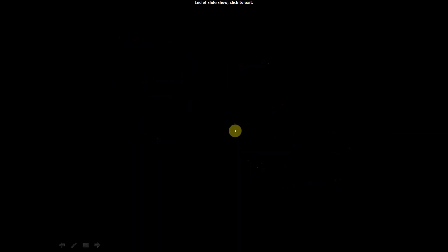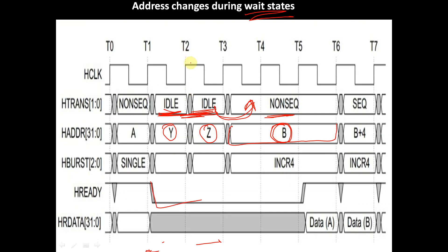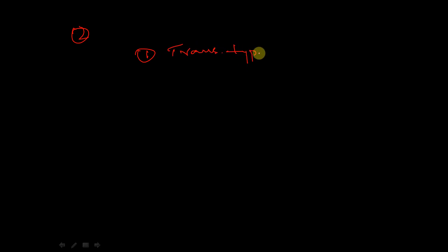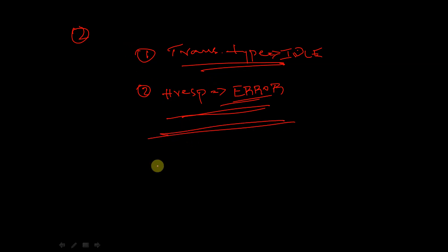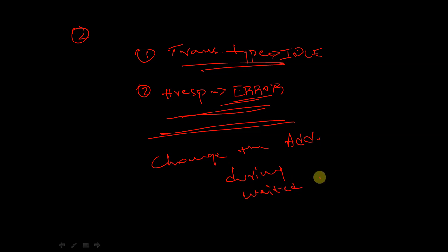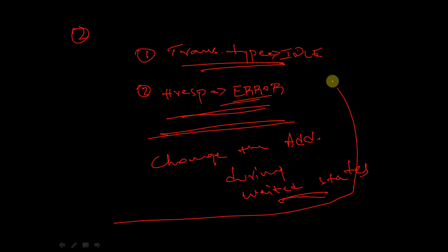So these are the two scenarios where a master is allowed to change the address during wait states. First scenario: when the transfer type is IDLE, a master is allowed to change the address during the wait state. Second scenario: when the HRESP response is ERROR, a master is allowed to change the address during a wait state. This is all about today's video. If you like this video, please like, share and subscribe. Thank you for watching.